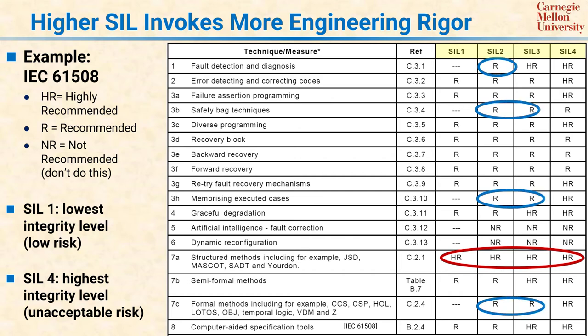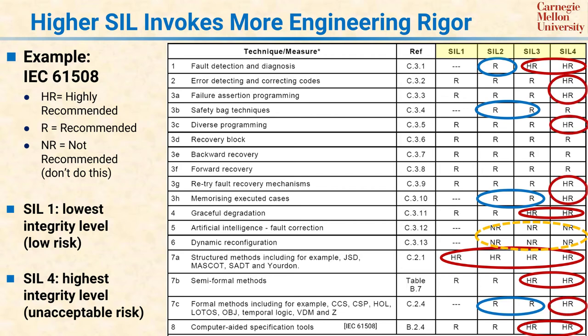At SIL 2, there may be significant injuries but no one is expected to die, so more techniques are recommended, but there are no additional highly recommended techniques. It is interesting that the use of artificial intelligence for fault correction and dynamic reconfiguration is forbidden starting at SIL 2, mostly because the system that is tested with these techniques is not going to match what the system in the field actually does due to reconfiguration. At SIL 3, people can die due to a system failure, and a significant number of additional techniques become highly recommended. At SIL 4, the consequences can be even worse, and many more techniques become highly recommended — which means you basically have to do them.